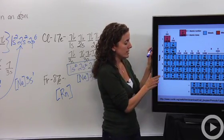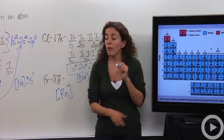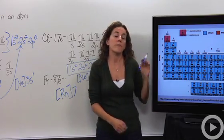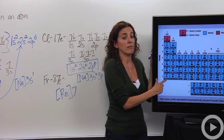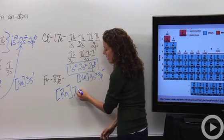So francium we know is in the seventh period. So we're going to say, okay, great. It's actually going to put seven there. And everything in group one ends in an S1. So we're going to say, okay, great. Seven S1.